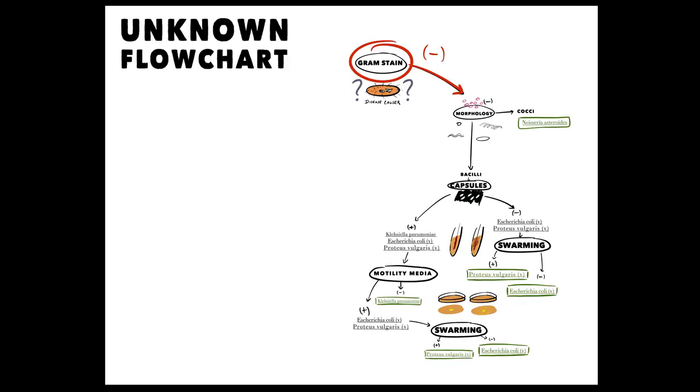We're now ready to move on by looking at the cell morphology. If our cells were cocci, then we'd be done. But let's assume that they're bacilli. We can now rule out Neisseria Asteroides and move on to a capsule stain.